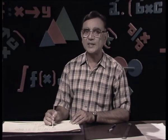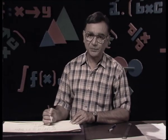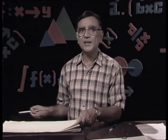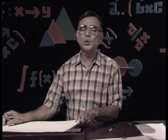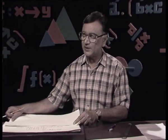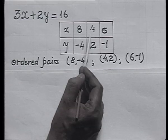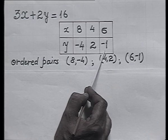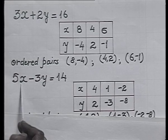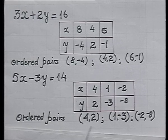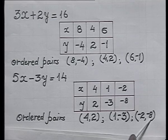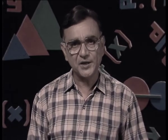Let us look at the graph of these two equations. For the first equation 3x plus 2y equals 16, some ordered pairs are (8, minus 4), (4, 2), and (6, minus 1). For the second equation 5x minus 3y equals 14, the ordered pairs are (4, 2), (1, minus 3), and (minus 2, ...). We talked about linear equations in two variables and systems of linear equations, and learnt one of the methods of solving them. We shall talk about more methods in the next lesson. Goodbye.